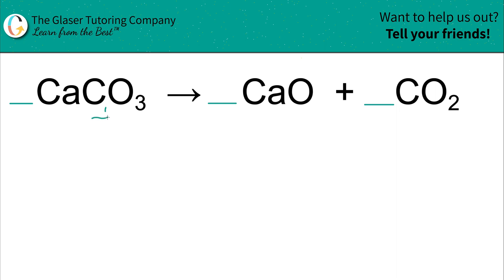Let's move on to the next one: carbon. You have one carbon on the left, and you also have one carbon on the right. So that's balanced. Remember, the subscripts tell you the number of atoms you have in a particular molecule.